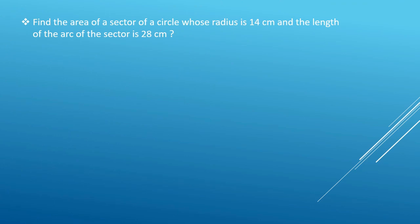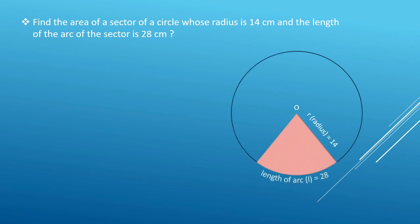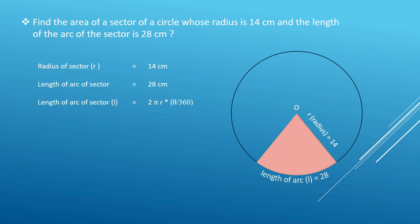Find the area of a sector whose radius is 14 cm and the length of arc is 28 cm. Using the formula: area of sector equals length of arc multiplied by r divided by 2, we get 28 multiplied by 14 divided by 2. The answer is 196 square centimetres.